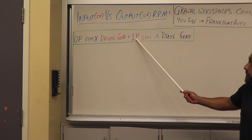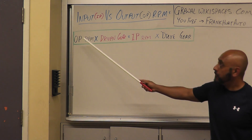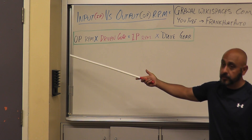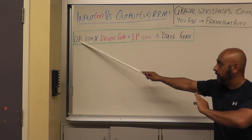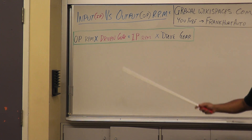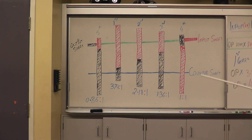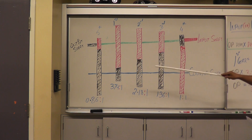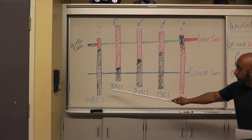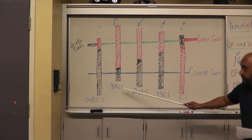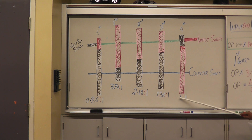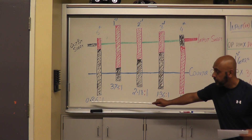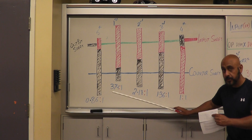In this case, input RPMs are coming from the engine and output RPMs are, let's say, the wheels — though there's a differential between the wheels and transmission. We need our drive and driven gear ratios for the formula. For first gear, there's your driven and there's your drive. Second gear: driven, drive. Third: driven, drive. Fourth: driven, drive. Fifth: there's your driven and there's your drive.